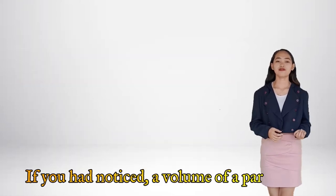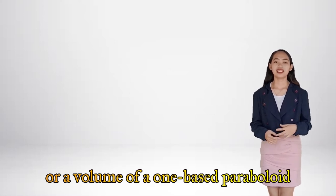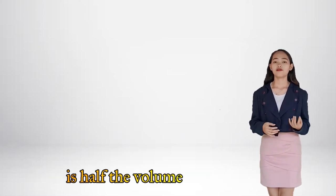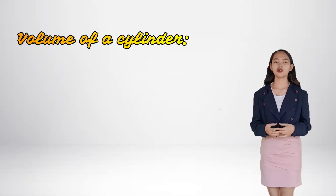If you had noticed, a volume of a one-base paraboloid is half the volume of a cylinder, which is if you could recall, the volume of a cylinder is V equals to pi r squared h.